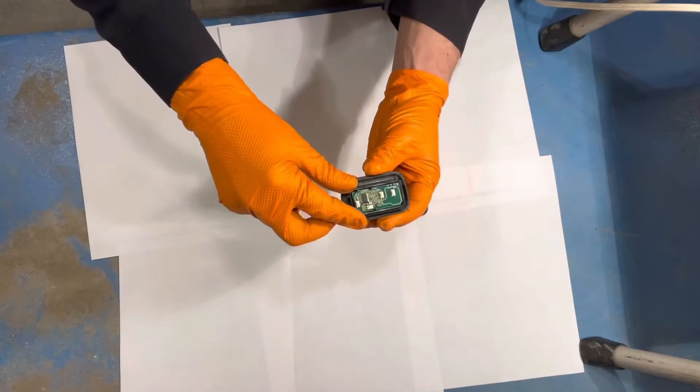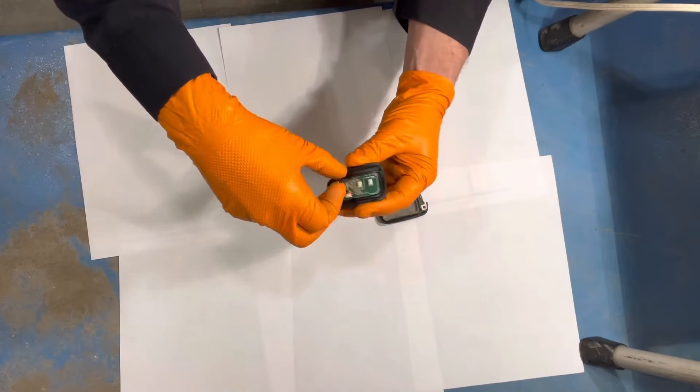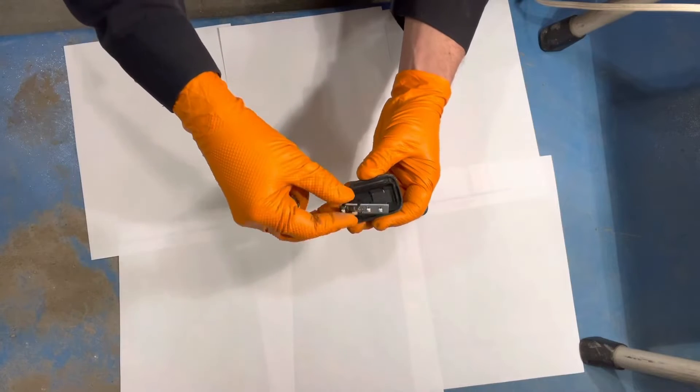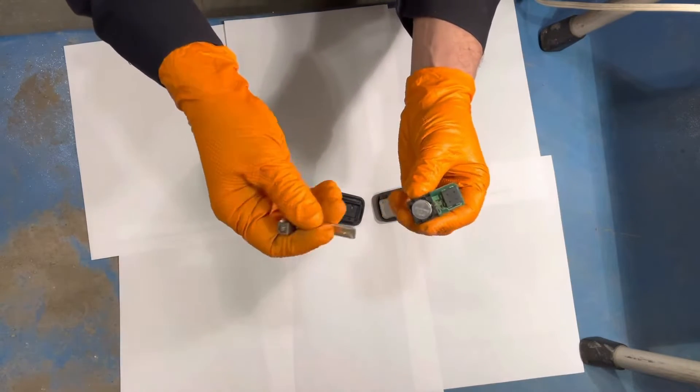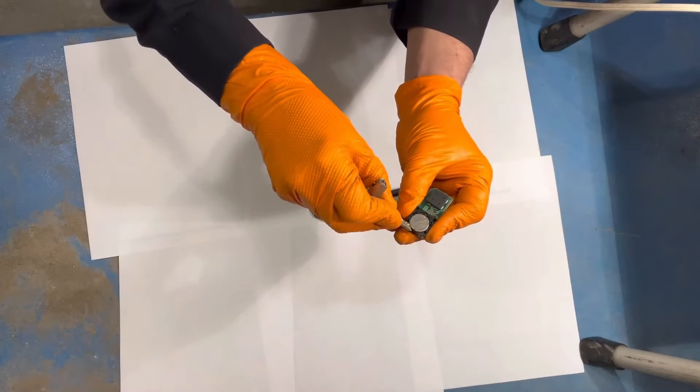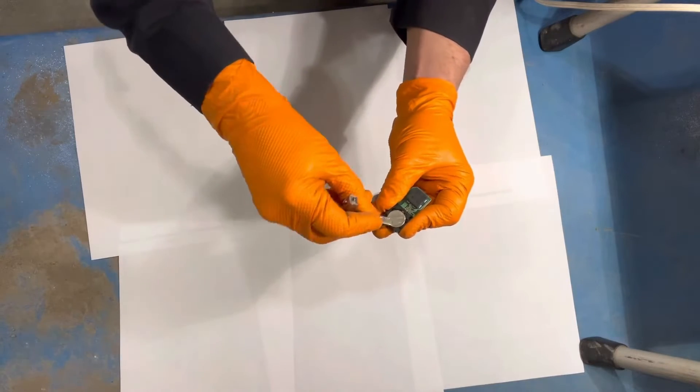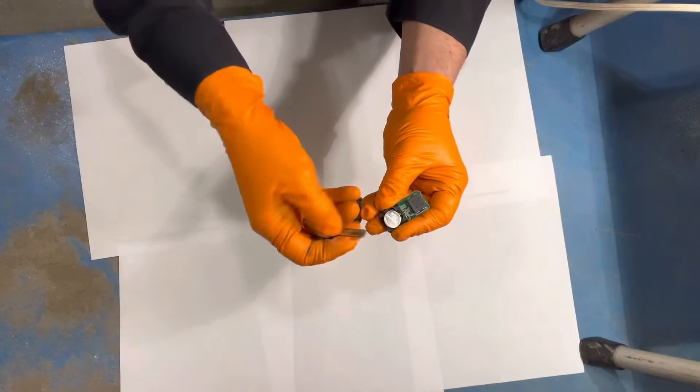Now you just need to pull out the little circuit board here, and on the other side you have the battery. So using your key again, get underneath the battery and pull it out.